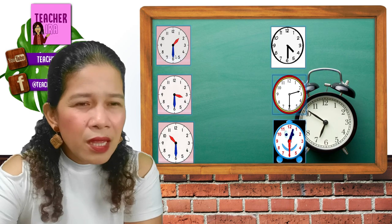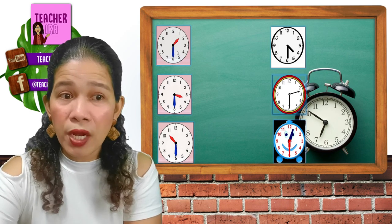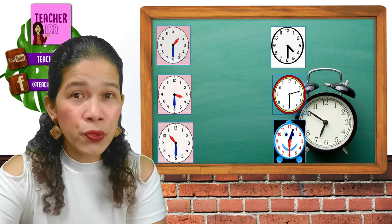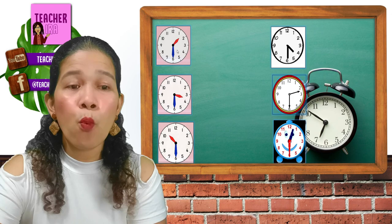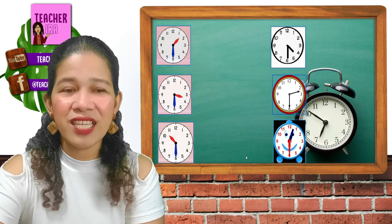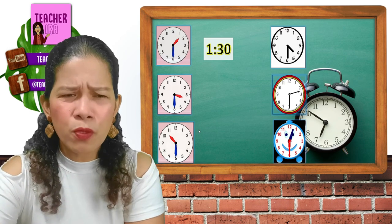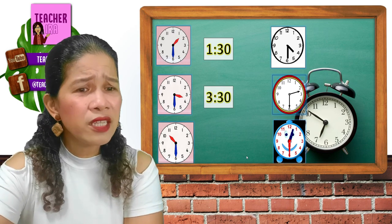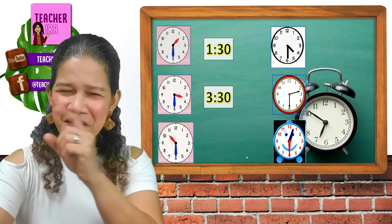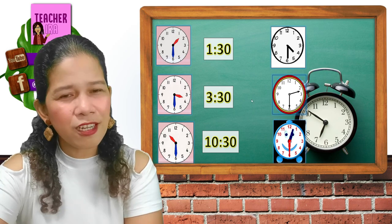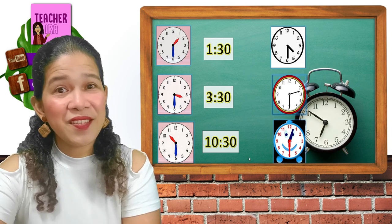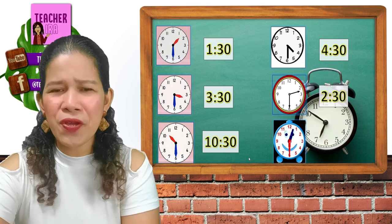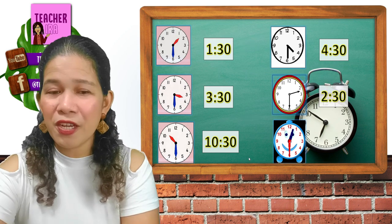Let's have exercises. The short hand is in the middle of 1 and 2 — what will you read, is it 1 or 2? You cannot read 2 yet because it didn't reach 2, so you say 1:30. Very good! How about this one — between 3 and 4? Yes, it's 3:30. How about the next one? Correct, it's 10:30. How about the next clock? Yes, 4:30. And that one? It's 2:30. And the last one — 12:30. Great job!